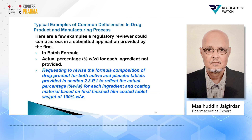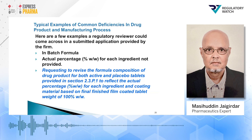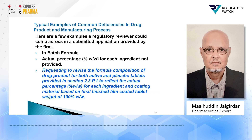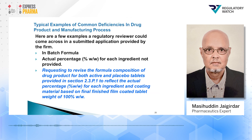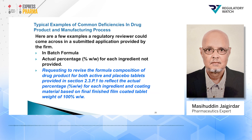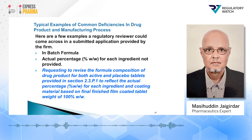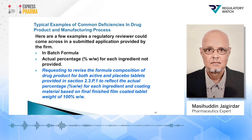Typical examples of common deficiencies in drug product and manufacturing process — here are a few examples a regulatory reviewer could come across in a submitted application. In the batch formula, the actual percentage weight by weight for each ingredient is not provided. I have requested firms to revise the formula composition of the drug product for both active and placebo tablets in Section 3.2.P.1 to reflect the actual percentage weight by weight for each ingredient and coating material based on the final finished film-coated tablet.